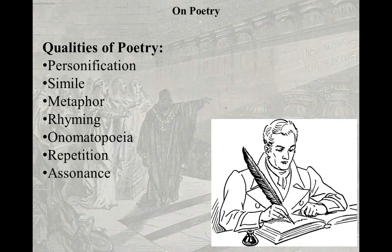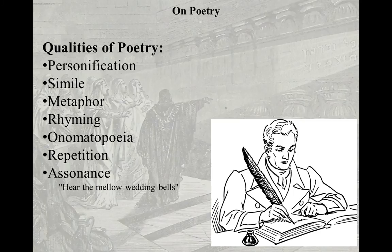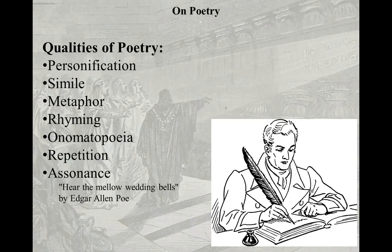We also have assonance, and assonance is the repetition of a vowel sound. People are aware of alliteration, which we'll talk about in a moment, but people aren't necessarily as familiar with assonance. I do have an example here from Edgar Allan Poe — listen to how this sounds: 'Hear the mellow wedding bells.' Can you hear that? That repetition of the E sound throughout — 'hear,' 'mellow,' 'wedding,' 'bells.' Assonance is a very useful and very subtle tool that you're not always aware of, particularly in contrast to alliteration.